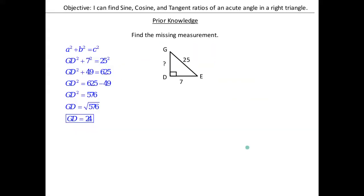Just as a review for prior knowledge: whenever we have a right triangle and we have a missing side, we're going to have to use the Pythagorean theorem. Across the 90 degree angle is always going to be our hypotenuse. Our hypotenuse in the Pythagorean theorem is our c value. So a squared plus b squared equals c squared. C is always the hypotenuse, and then we have our legs, a and b.